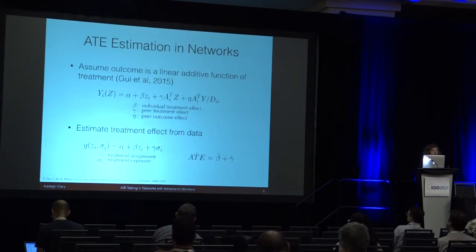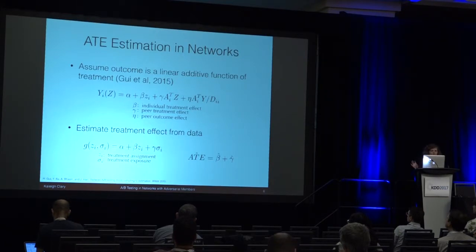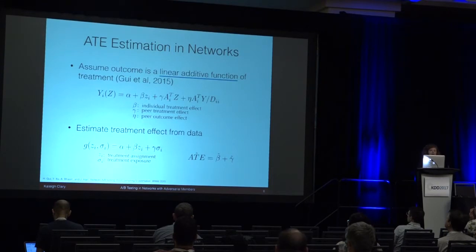We know how to deploy treatment across the network, and now we'd like to estimate the effect of that treatment. We'll use the framework from Gui et al. from LinkedIn, from their WWW paper in 2015. Basically, this says that my outcome is modeled as a linear additive function of treatment — you're affected by your individual treatment status, the treatment status of your friends, and the outcome of your friends. Given a treatment assignment vector and the outcomes from the network, you can estimate the treatment effect from data. We're looking at ATE, which is just the difference between global control and global treatment across the network. It's really important to note that this is a linear additive function — this is what most of our analysis is built on.